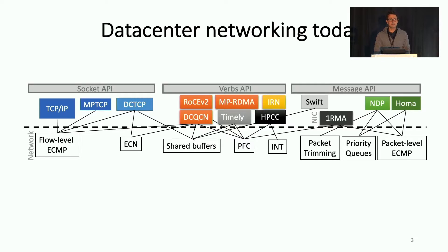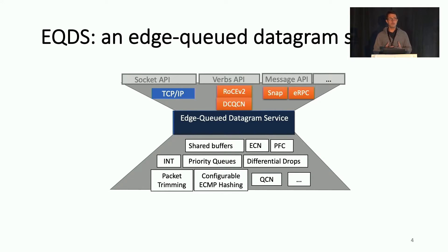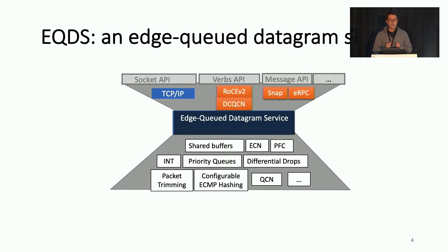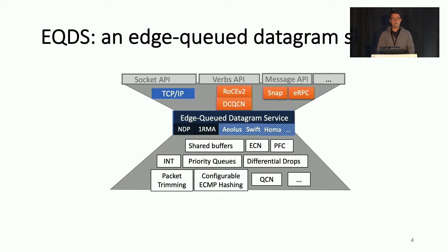We're trying to right this state of affairs. What we propose is a novel architecture for data center networking based on the Edge-Queued Datagram Service, or EQDS. This sits underneath the host stacks and gives them a uniform view of what the network is doing — basically a queue at the edge that sends congestion signals when you're trying to overflow it. Under the hood, EQDS uses multiple network backends depending on the hardware available, getting packets across the network quickly and without network buffering if possible.